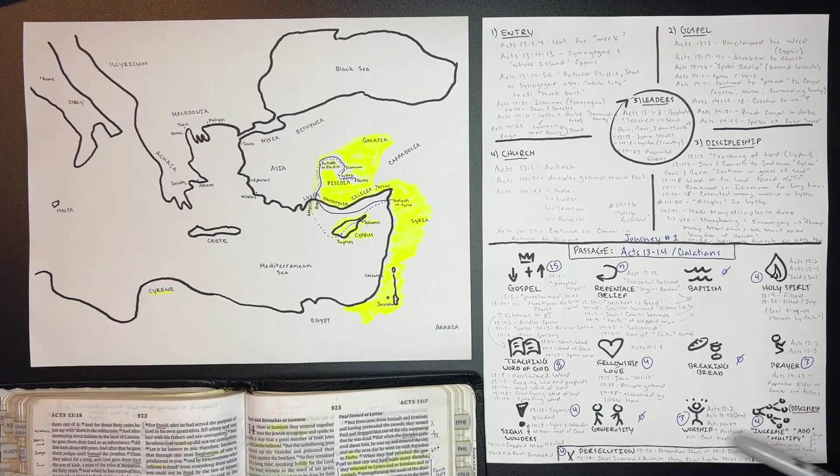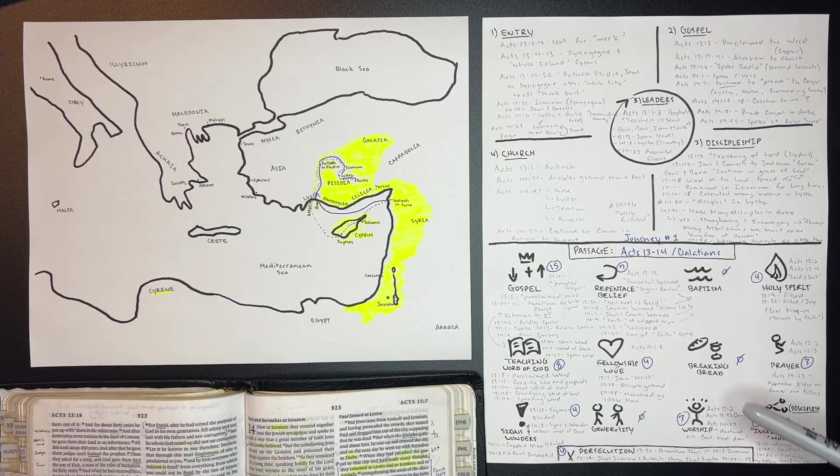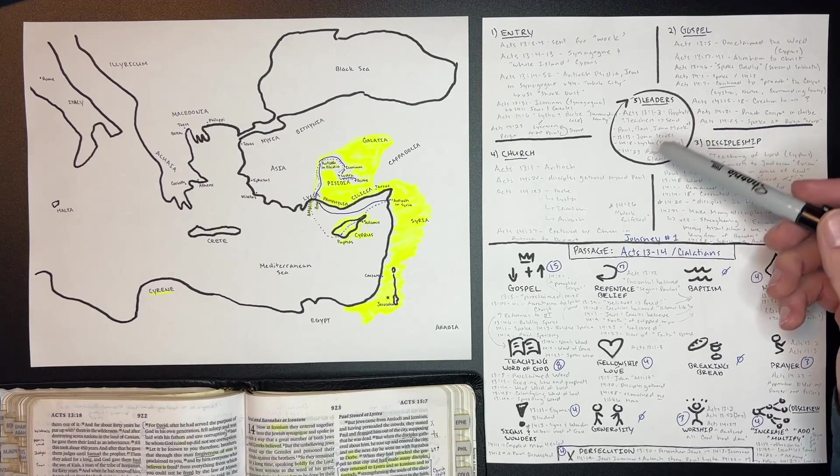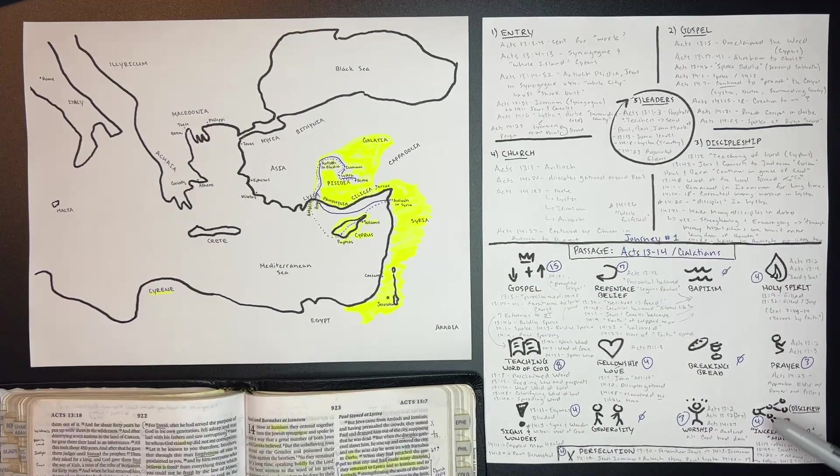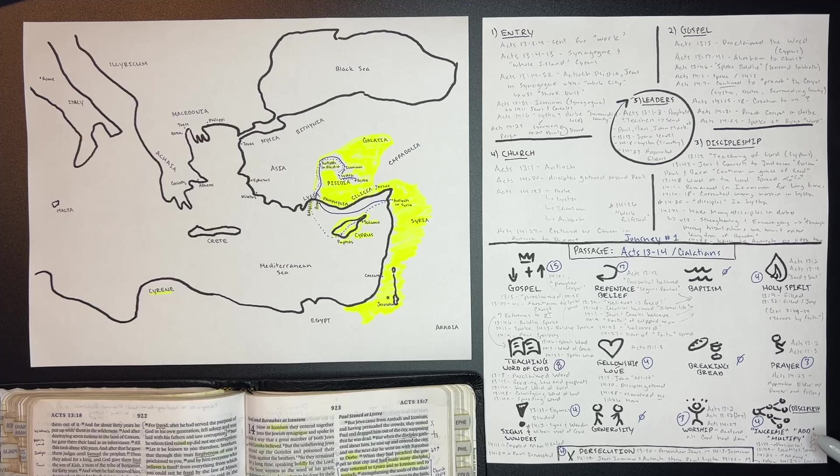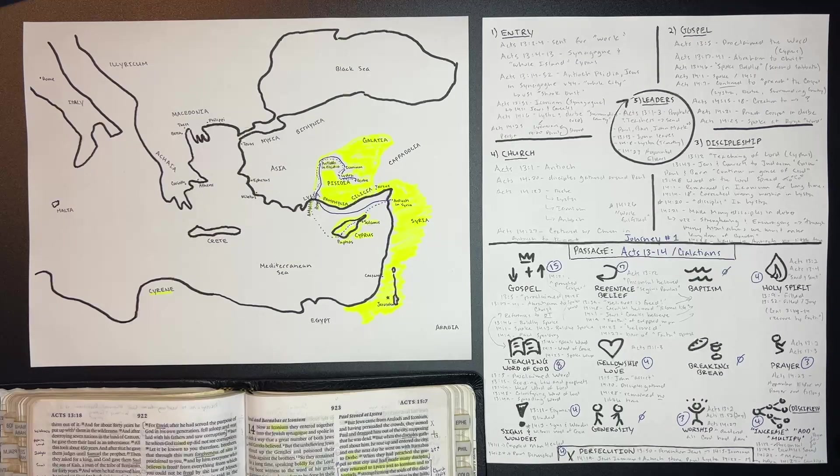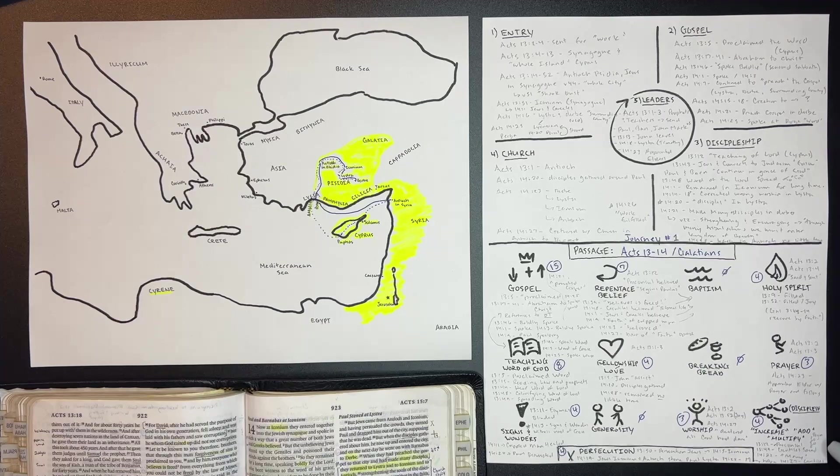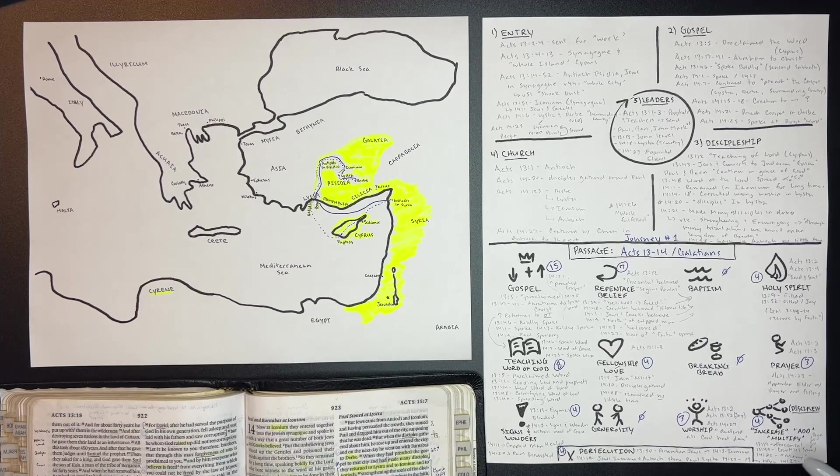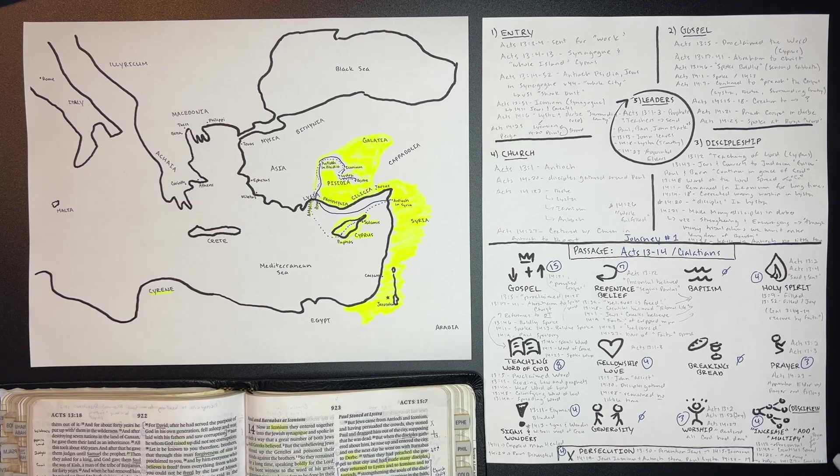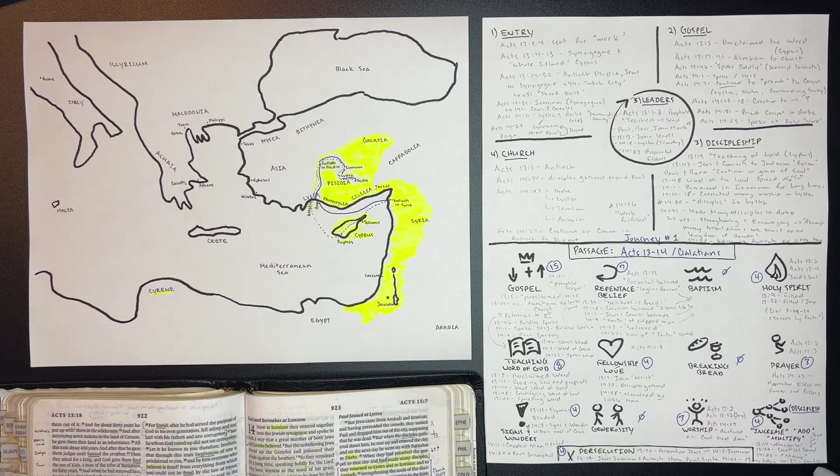We see three times that worship is mentioned or joy. We see the leaders in the first church were worshiping the Lord and fasting in Antioch. And we see four times where it mentions an increase, add, or multiplication. Obviously, with the proconsul believing, it says that the Gentiles spread the Word throughout the region, which is a very clear indicator that new believers were spreading the gospel. In 14:22, we see that many disciples were made. And in 14:27, how the Lord opened the door to the Gentiles.